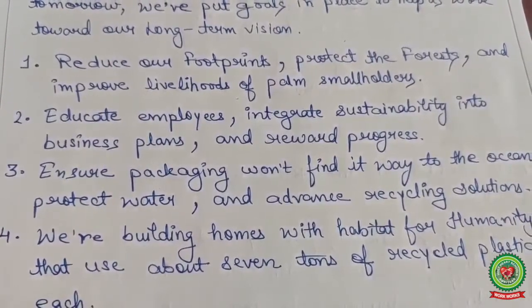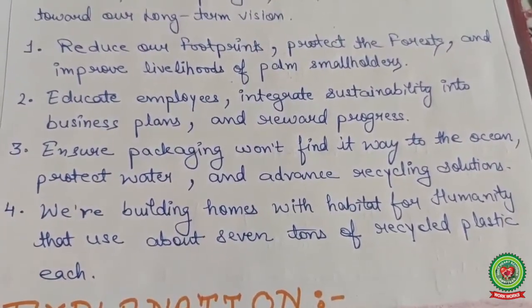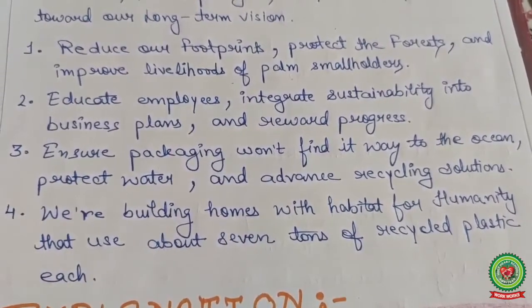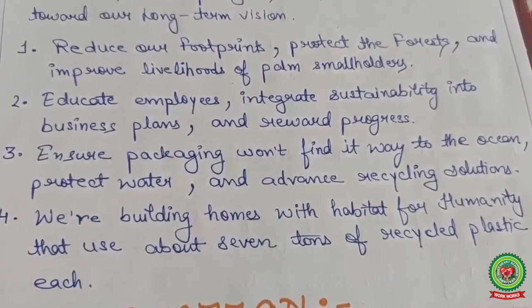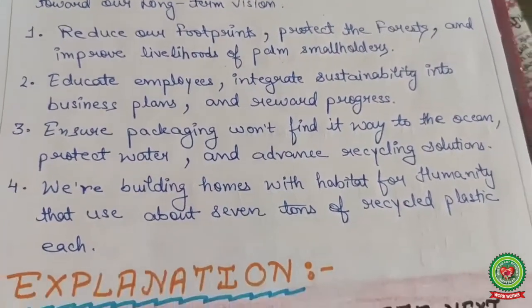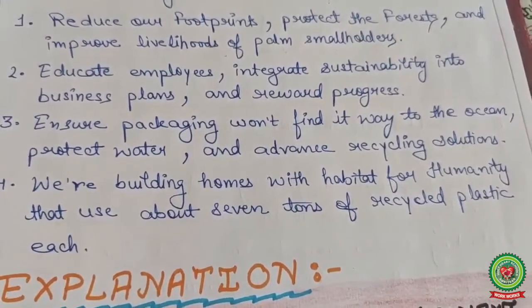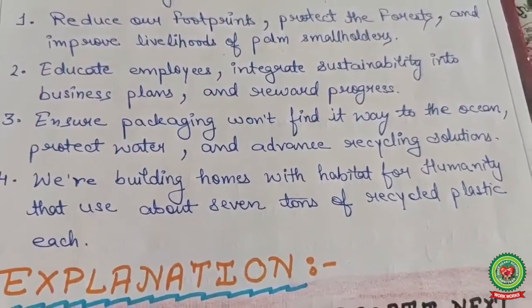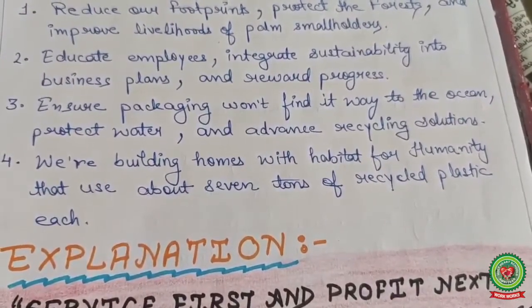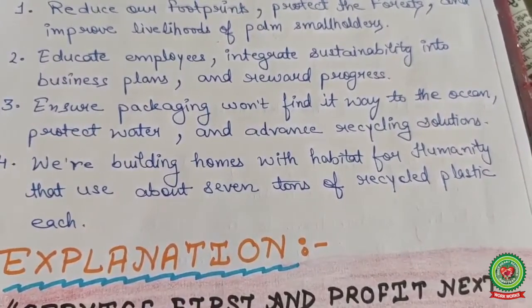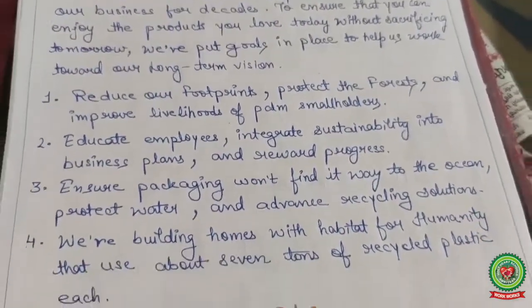P&G's second CSR responsibility: educate employees, integrate sustainability into business plans and rewards — meaning protect, educate, and provide rewards to employees. Third: ensure packaging doesn't find its way to the oceans — meaning proper disposal and recycling of waste materials. Fourth: building homes with Habitat for Humanity using about seven tons of recycled plastic each. Those are P&G's corporate social responsibilities.